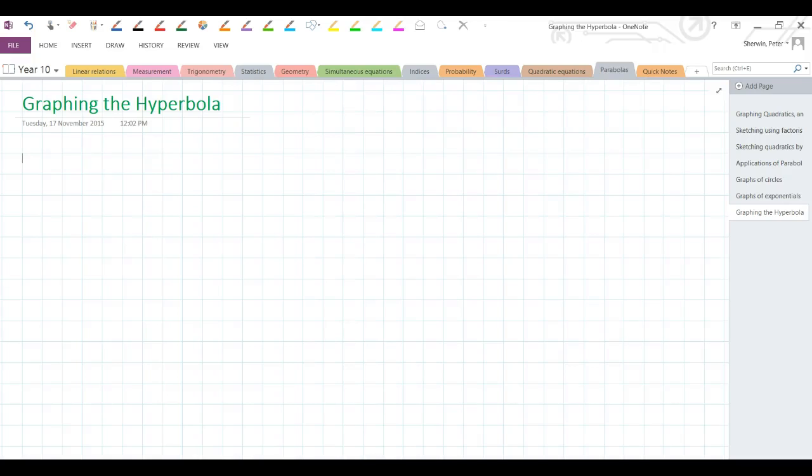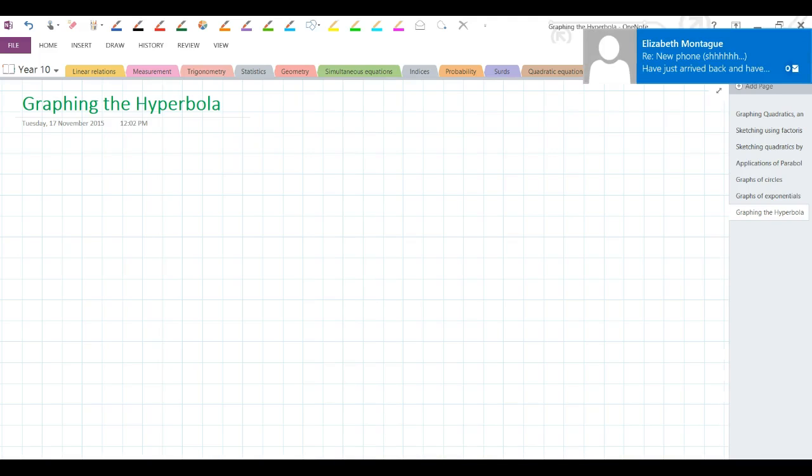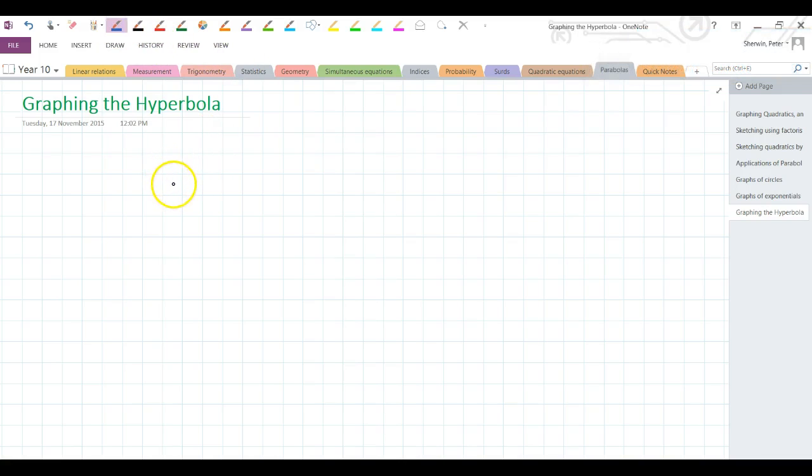Okay, in our final YouTube for the year, I think, we're going to be looking at graphing our final type of graph, and that is the hyperbola. So we start off with a function that looks like this. We haven't done any of these yet. 1 over x.